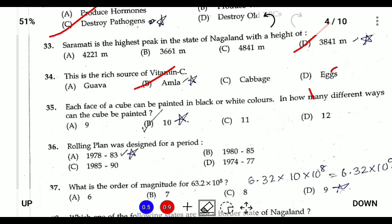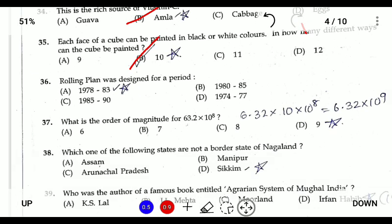Question thirty-five: each face of a cube is painted black or green — in how many ways can the cube be painted? The answer is 10. This question was also asked in UPSC 2019 Prelims.